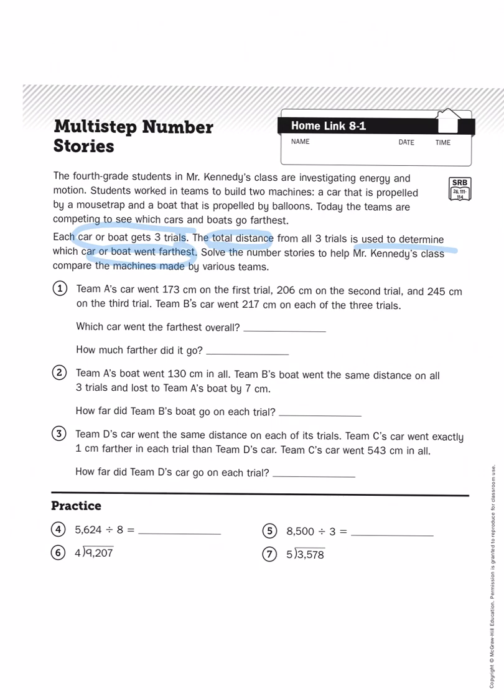Team A's car went 173 centimeters on the first trial, 206 centimeters on the second trial, and 245 centimeters on the third trial. Team B's car went 217 centimeters on each of the three trials. Which car went the farthest overall? How much farther did it go?